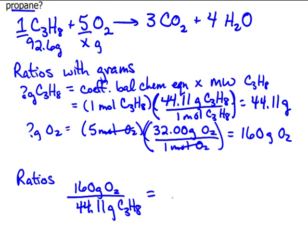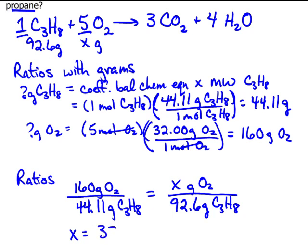Then we go to the other side, and we say, well, I want to know how many grams of O2. This time, we don't have 44.11, we have 92.6 grams of C3H8. That's what was given. So now I can cross-multiply and solve, and I will get 336 grams of O2 are needed.